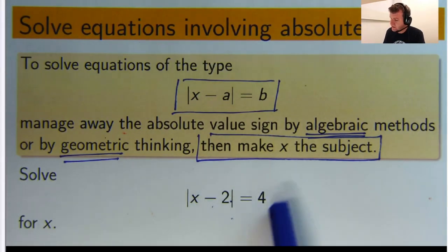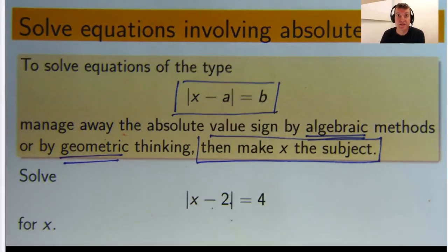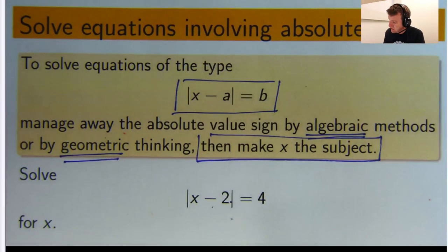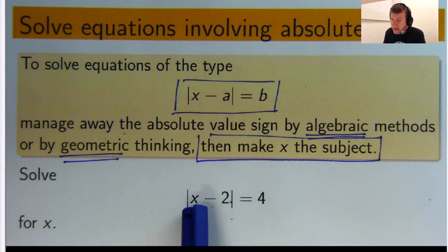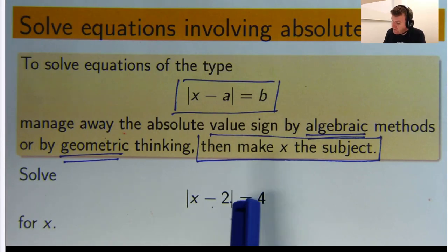So what is this saying? This is saying, remember, the absolute value measures distance. So they're saying, calculate all the x points that are exactly 4 units away from the number 2.